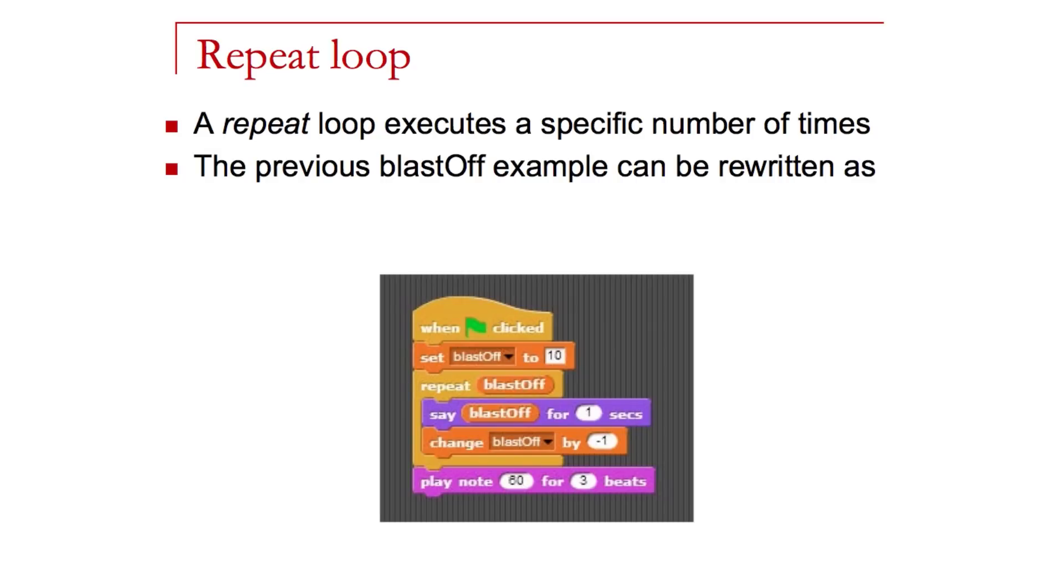A rewrite of the blast-off program is right here, where you can see we're again initializing blast-off to 10, and now what I'm doing is I'm repeating 10 times. So blast-off is 10, so the repeat blast-off is really just saying repeat 10 times, and the code there is very similar inside. It's exactly the same code as before. I am saying blast-off, and then I'm reducing blast-off. I don't have to do a check like in the repeat until. I just put repeat blast-off, and in this case, I then play the note again once I've executed that repeat statement 10 times.